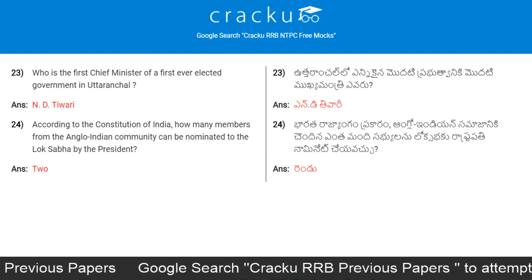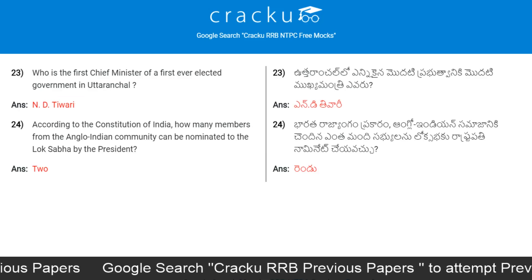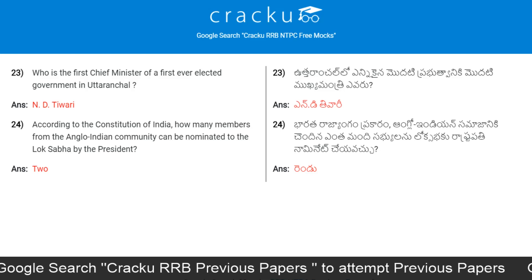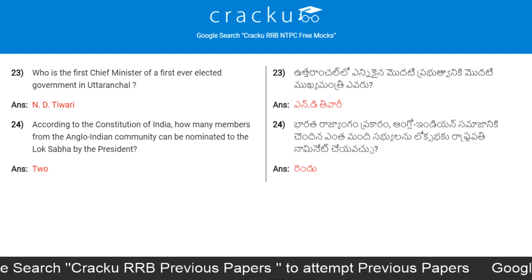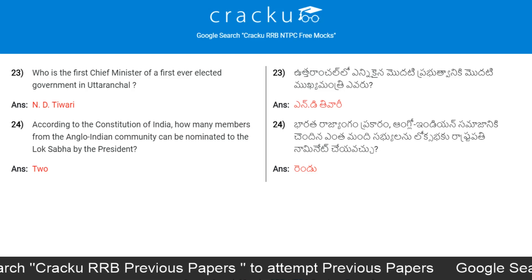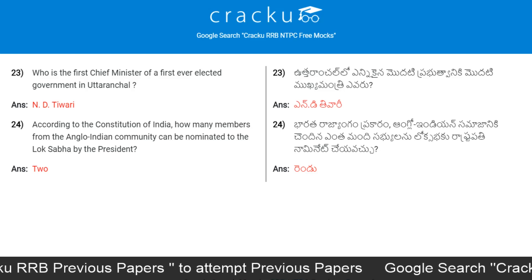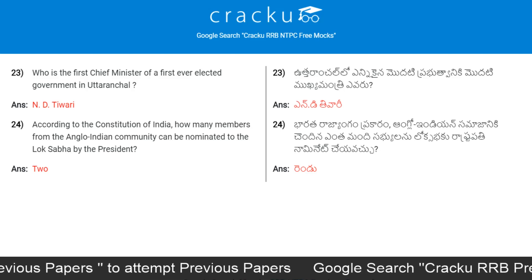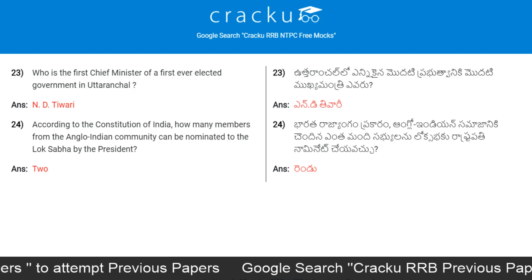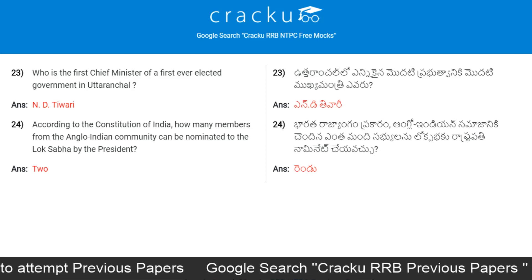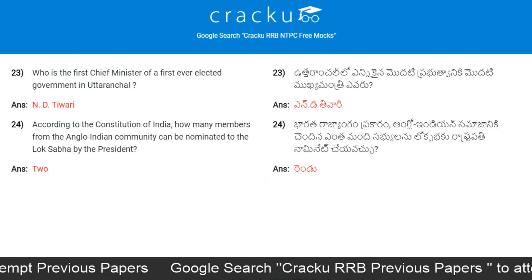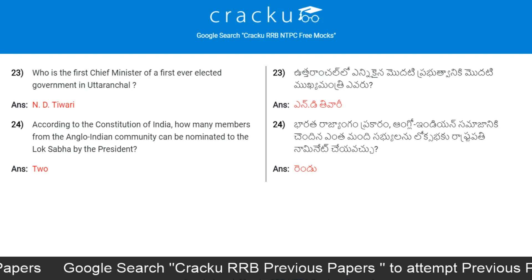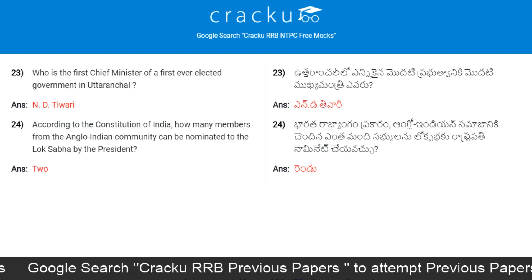Who is the first chief minister of the first-ever elected government in Uttaranchal? Indi Tiwari. According to the constitution of India, how many members from the Anglo-Indian community can be nominated to the Lok Sabha by the President? The answer is 2.